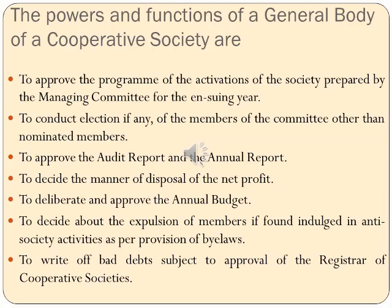The general body of the cooperative society has the following functions: approving the program of activities prepared by the managing committee for the year; conducting elections; approving the audit report; deciding the manner of disposal of profit; approving the annual budget; deciding the expulsion of members found indulging in wrong activities; and writing off bad debts, subject to the approval of the registrar.